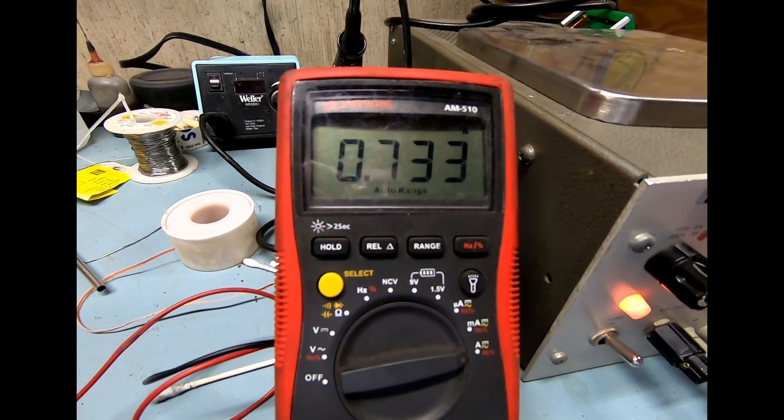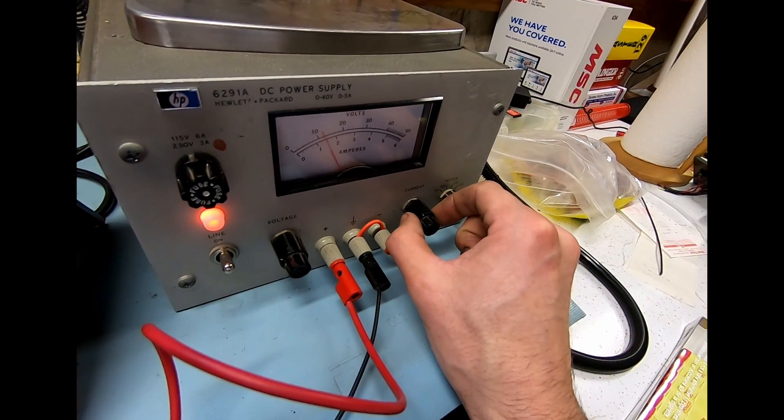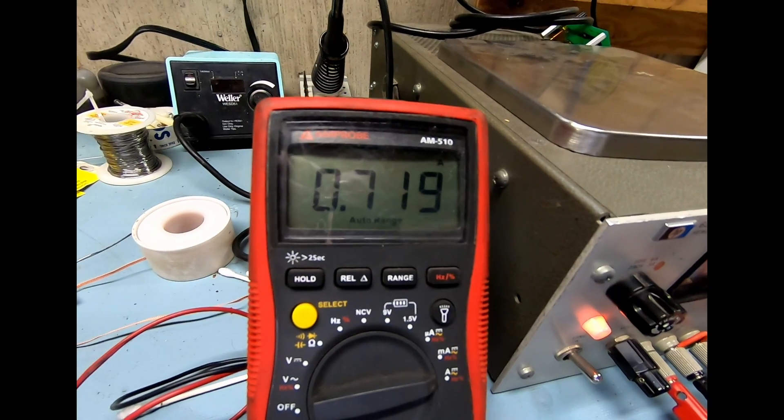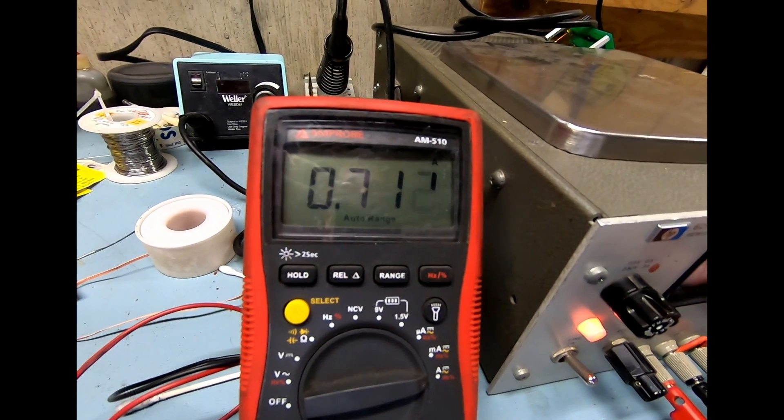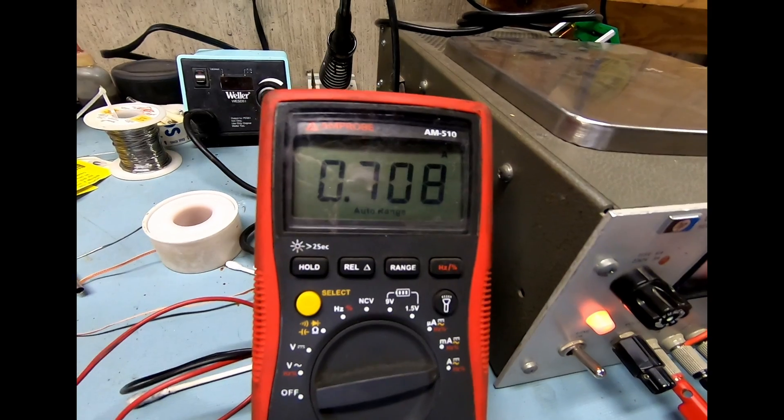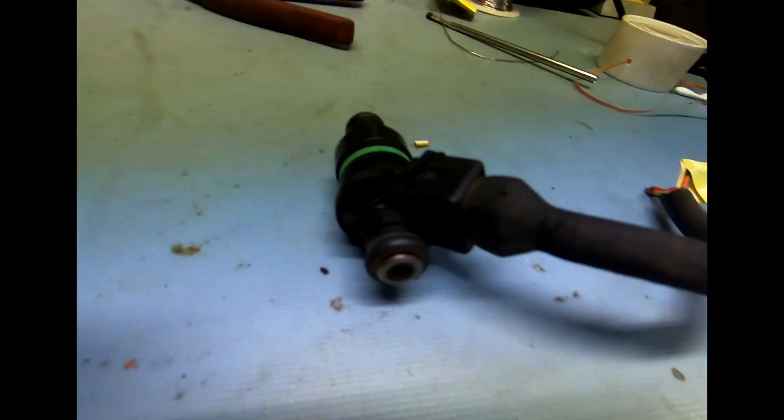Now if you see, if I raise this up, it doesn't matter because the injector is acting as a load and it's only consuming 0.7 amps. So now that you see it's a maximum of 7 amps, go back down. Now, let's go right to the injector. Listen very closely.